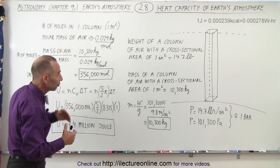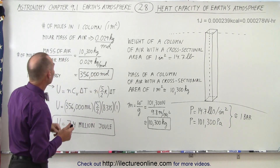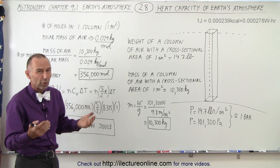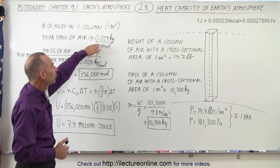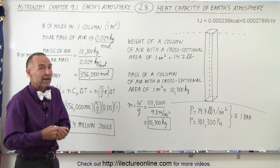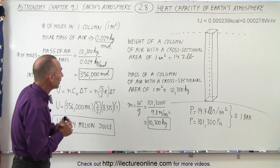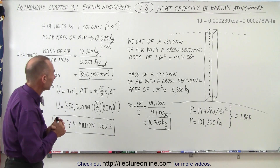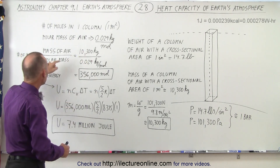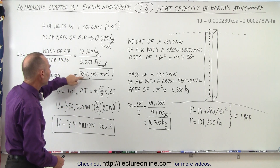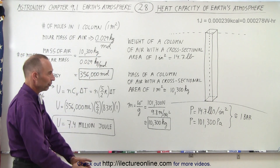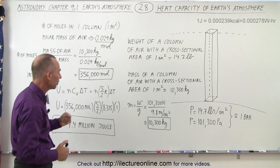Now we need to figure out how many moles of air are in such a column. The molar mass of air on average — because it's about three-quarters nitrogen and one-quarter oxygen — is about 0.029 kilograms per mole. The molar mass of nitrogen is 28 grams and oxygen is 32, so the average is about 29 grams. The number of moles in that column is the mass divided by the molar mass, which is approximately 356,000 moles of air in a column from the surface of the Earth to space with a cross-sectional area of one square meter.